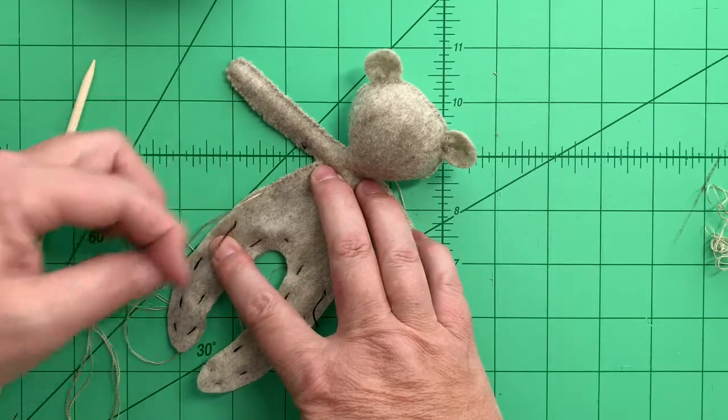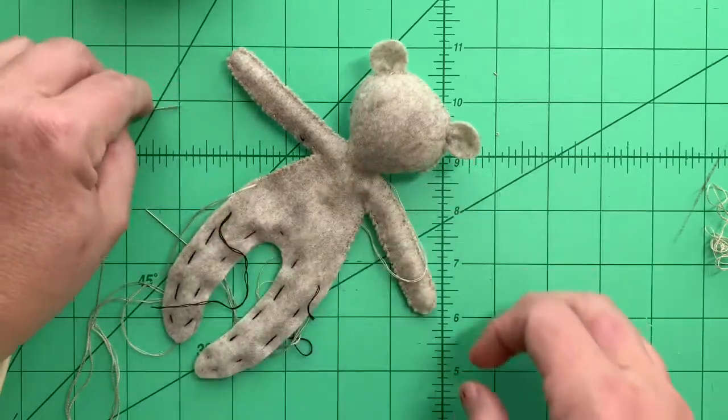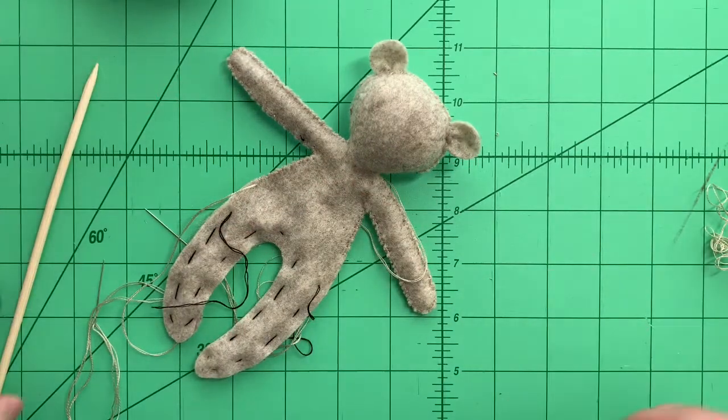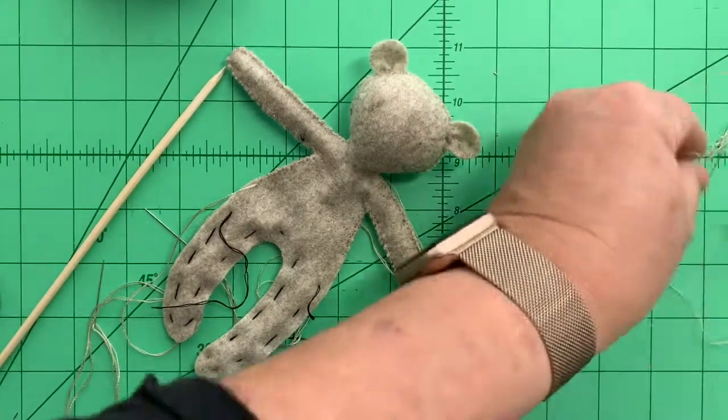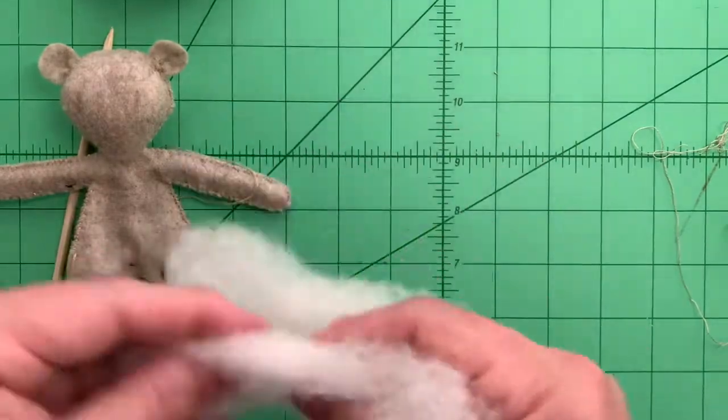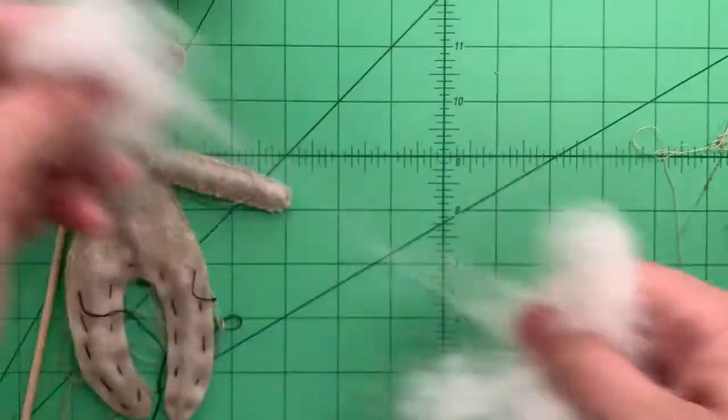There we go, not too much down there. There's my stitching, my basting starts again here. Now what I'm going to do is get my skewer and my roving. Same thing, we're going to just take the roving and pull it apart into little bits.